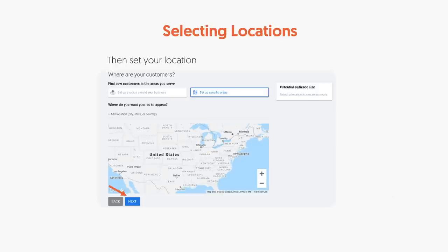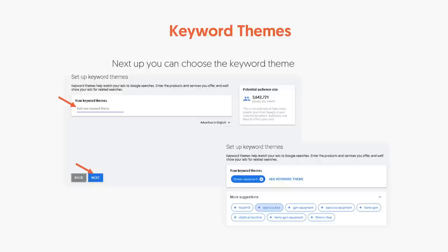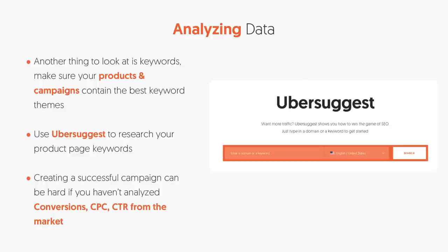Pick the locations you're targeting. It could be a city, but in most cases with e-commerce you're going to pick a country. You can exclude regions like Hawaii and Alaska or other parts of the world if you don't want to ship to them. Then put in the keywords you think are relevant to your products. If you're not sure, go to ubersuggest.com and put in keywords related to your product, or put in your competition's website URL and it'll show you all the keywords they rank for.